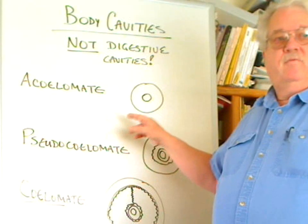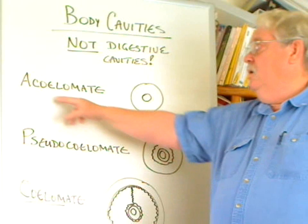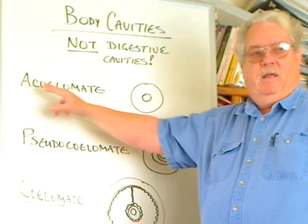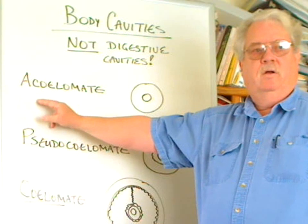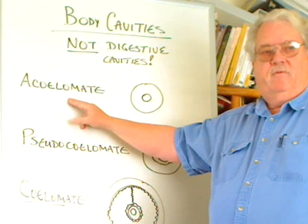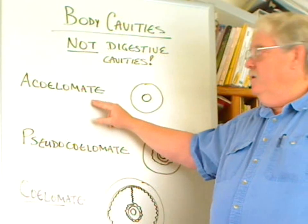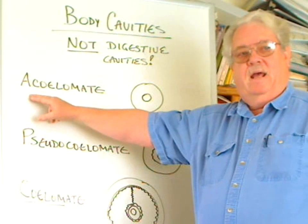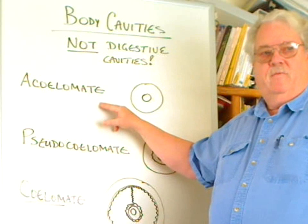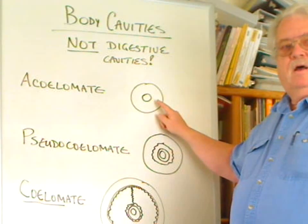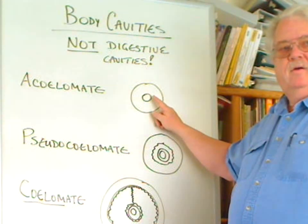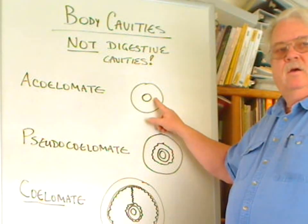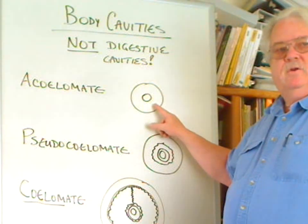Organisms like flatworms are acelomate. 'A' means without, 'coelom' means body cavity, and '-ate' means possessing. So acelomate translates roughly as not having a body cavity. They have an opening for the digestive tract immediately covered by solid body with no space between the two.